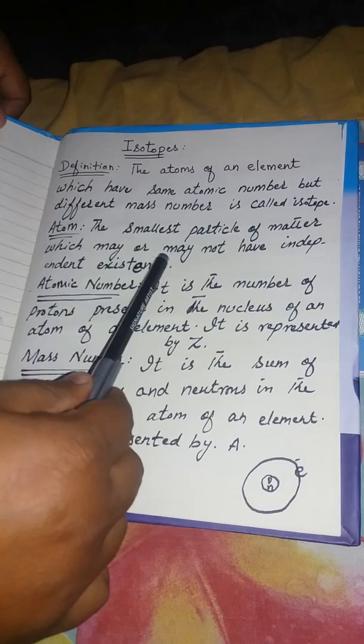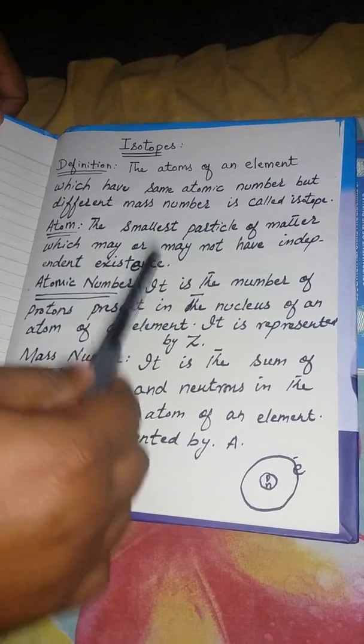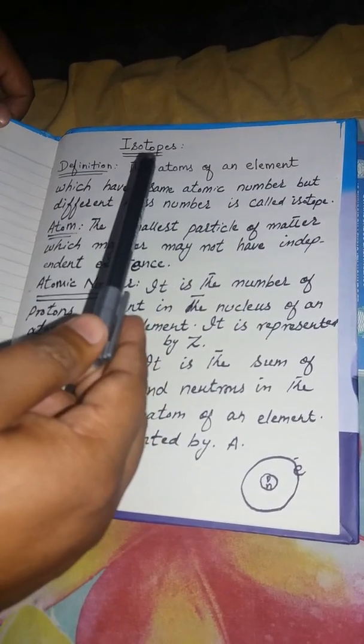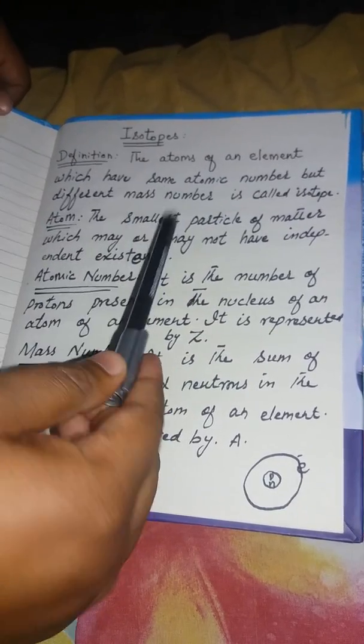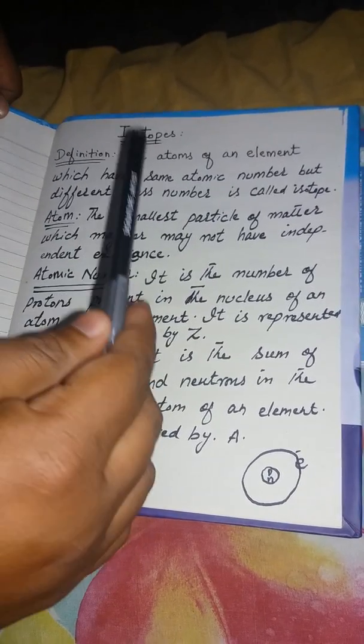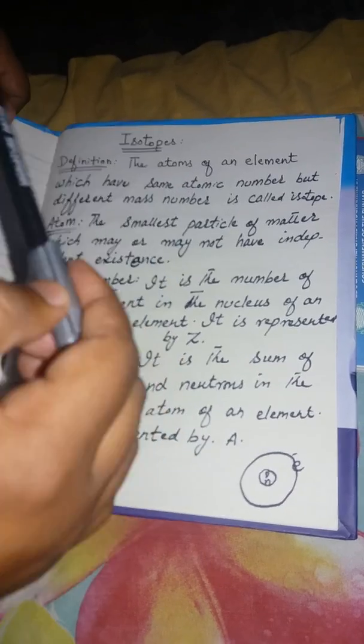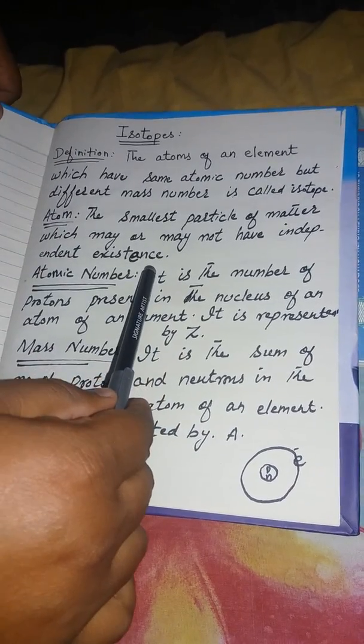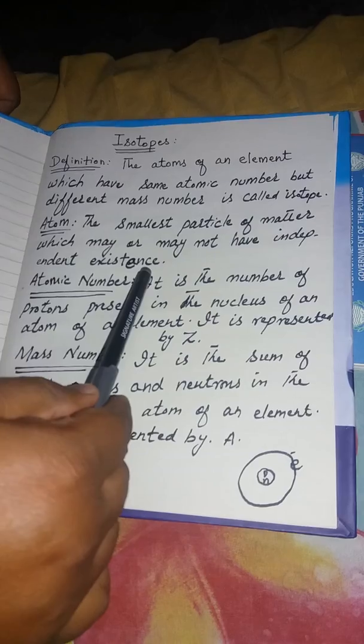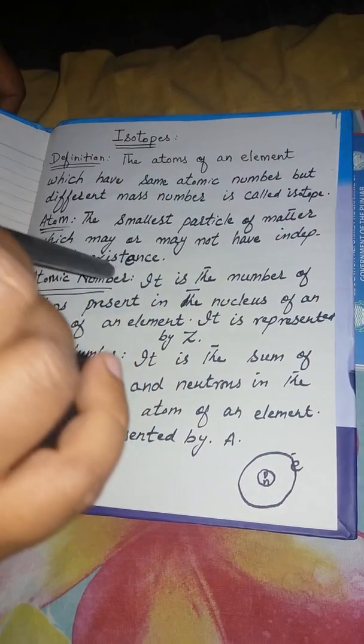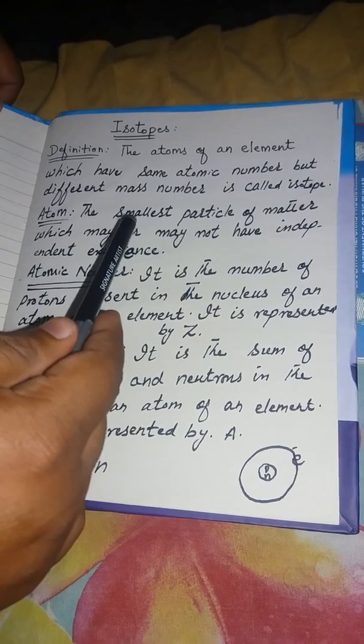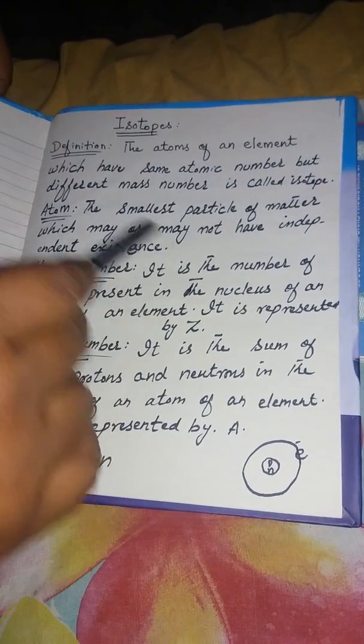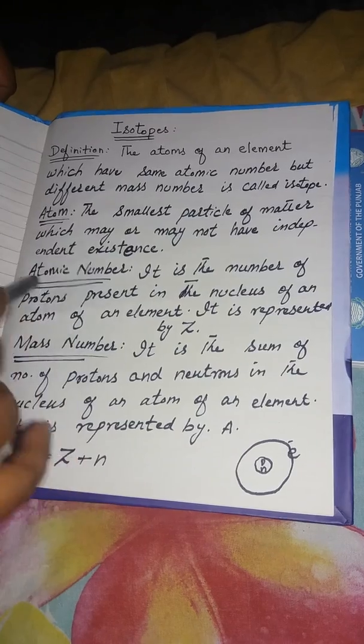Secondly, I will define the word element. What is an element? Element is a substance or metal which contains same type of atoms having same atomic number but cannot be decomposed into simple substances by ordinary chemical methods. We can also define the element as the substance in pure form is called element.